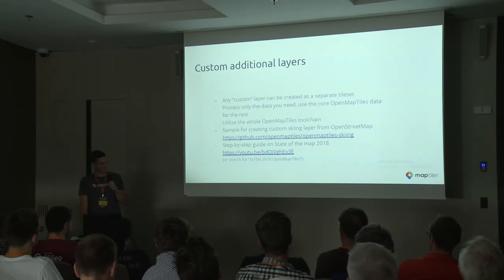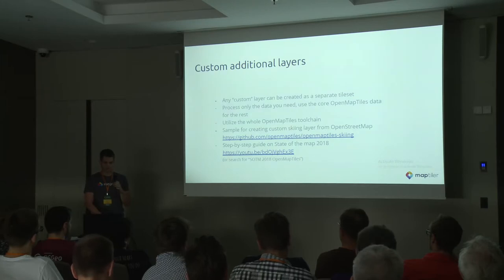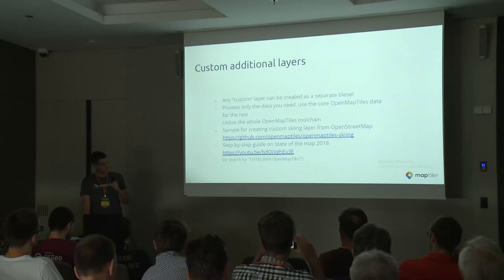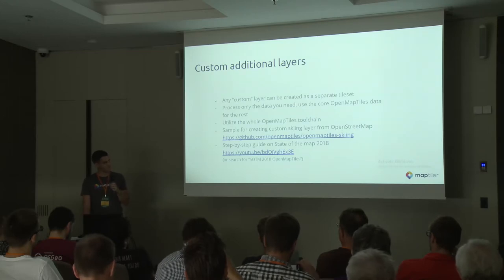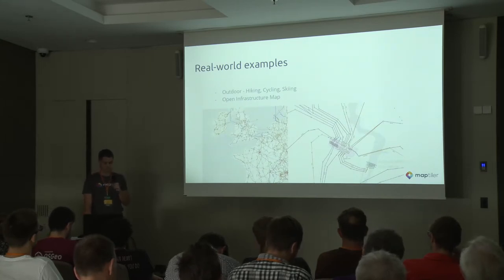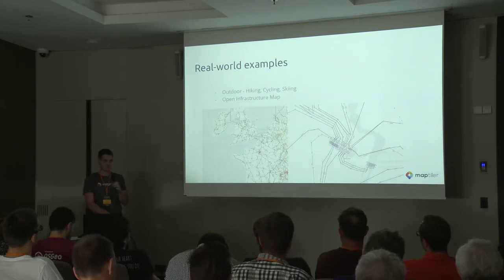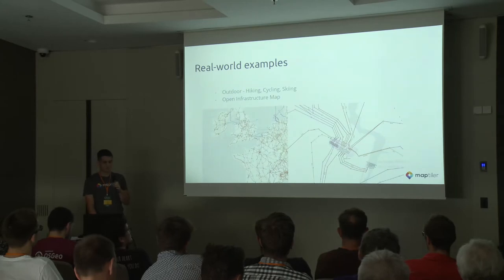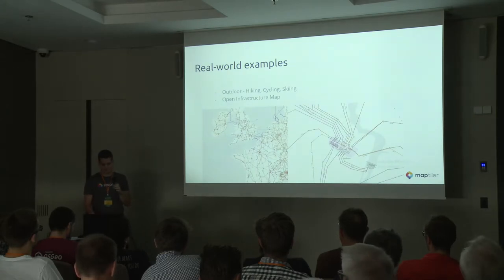The skiing layer example contains just skiing-related features like ski slopes and points of interest. You don't have to generate the whole world — you can take the prepared extract and only generate the one layer that you need, which is obviously much faster. There's a video from State of the Map 2018 with a step-by-step guide on this. A real example is the Open Infrastructure Map, which uses the core OpenMapTiles as a base map and processes only power-grid-related layers — power lines, electricity poles, and things like that.